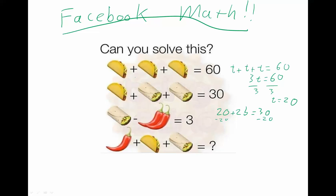Subtracting 20 from both sides, we get 2b equals 10. And dividing both sides by 2, we have b equals 5. So these burritos have to be 5.